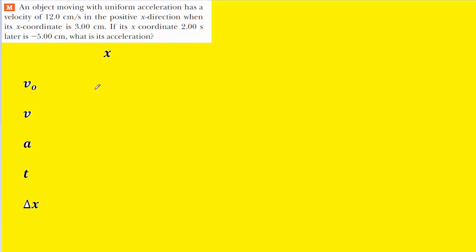And what we can do is go ahead and plug the given information into this table. The initial velocity of the object was given as 12 centimeters per second in the positive direction, so we have positive 12 here. The final velocity was not given to us, so we'll leave that blank.